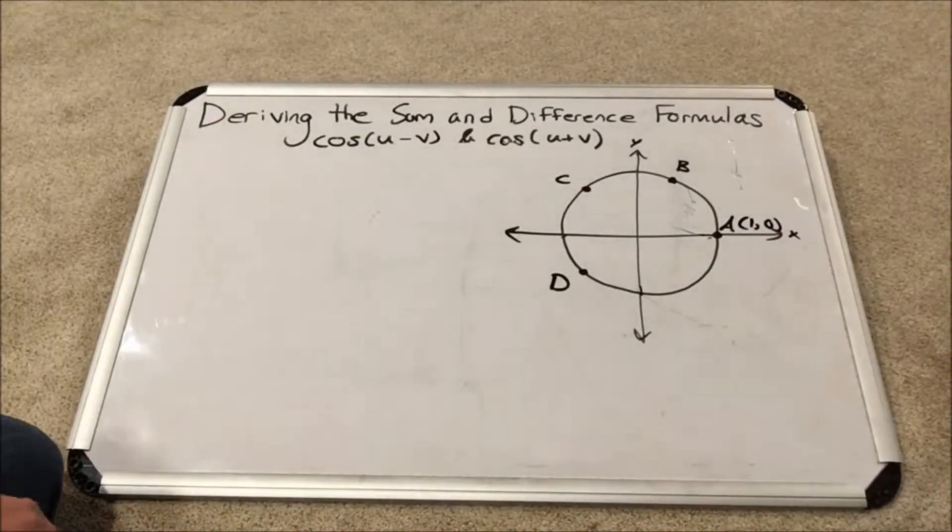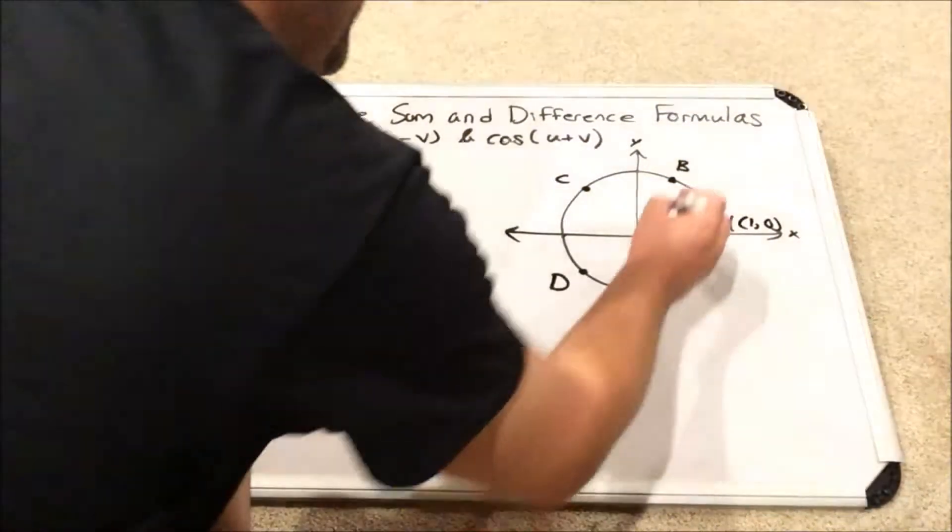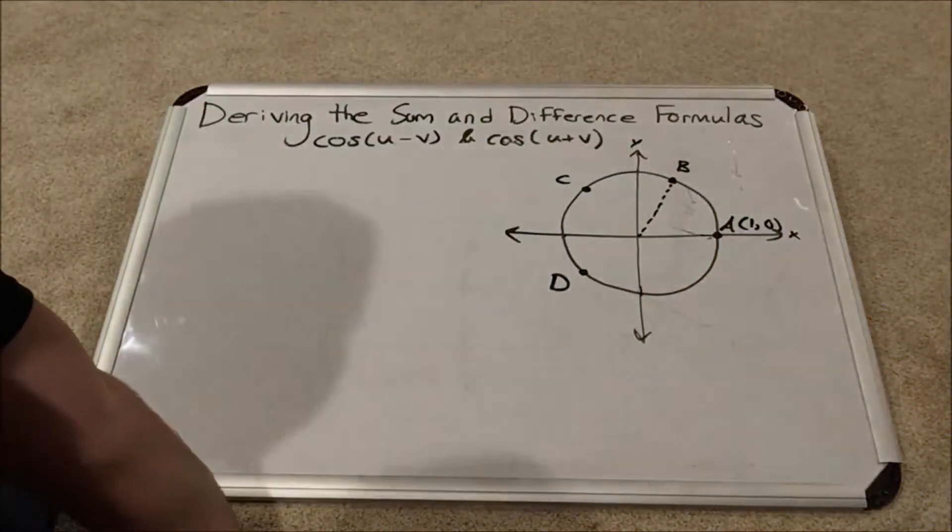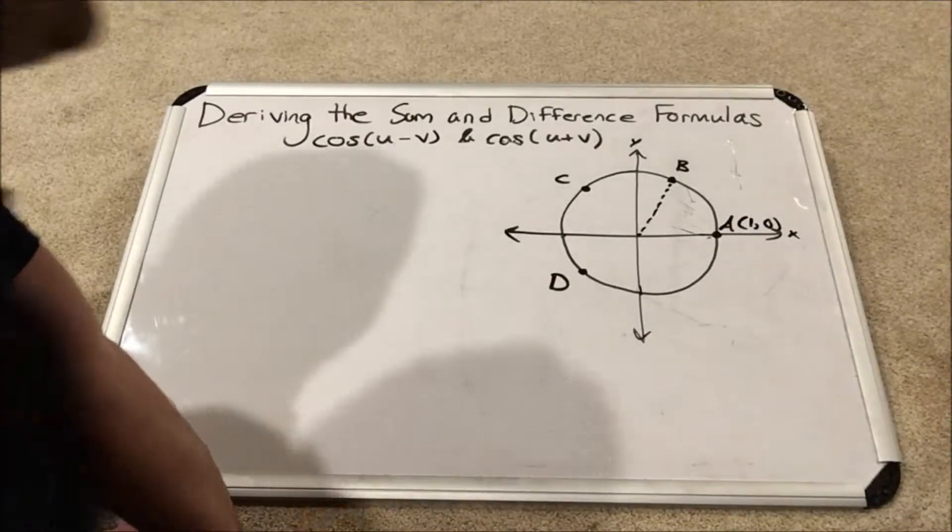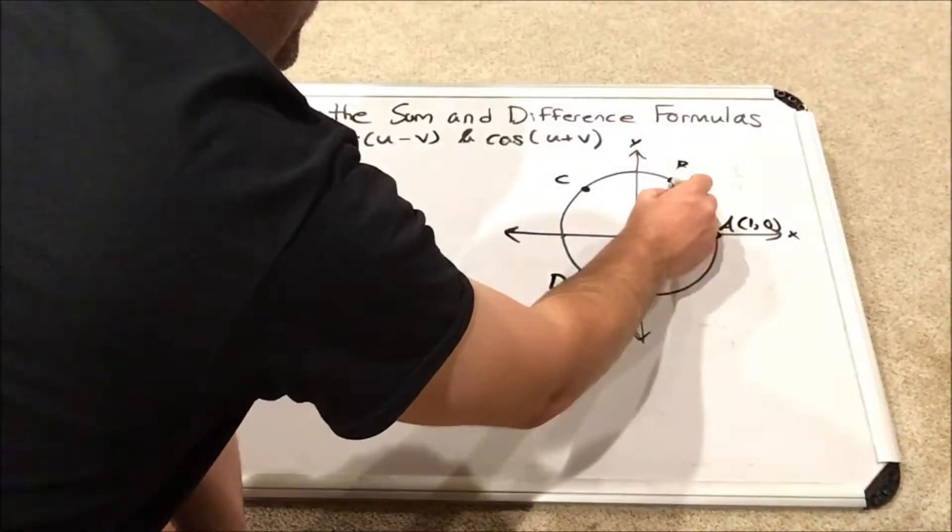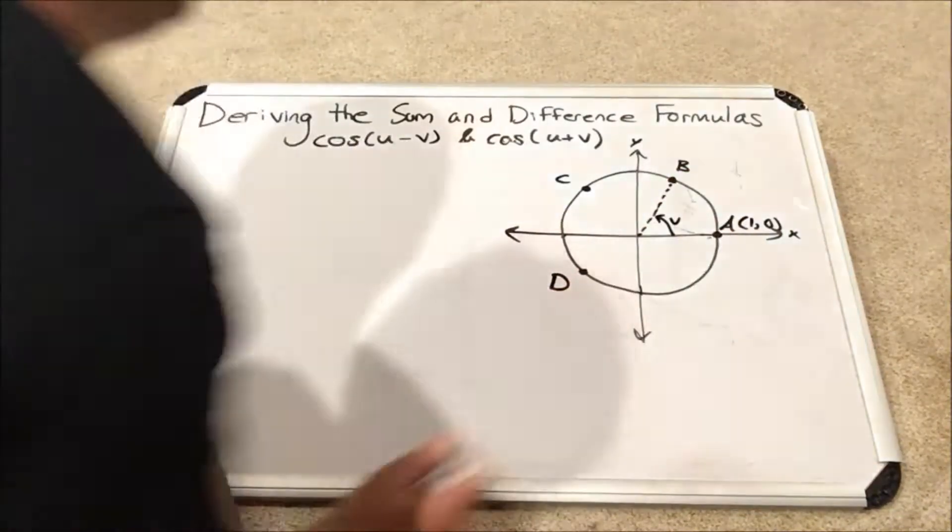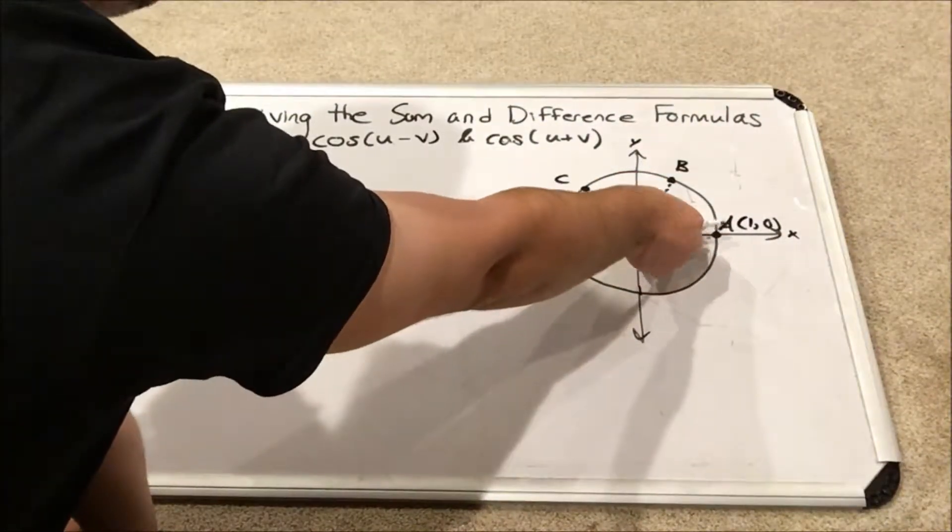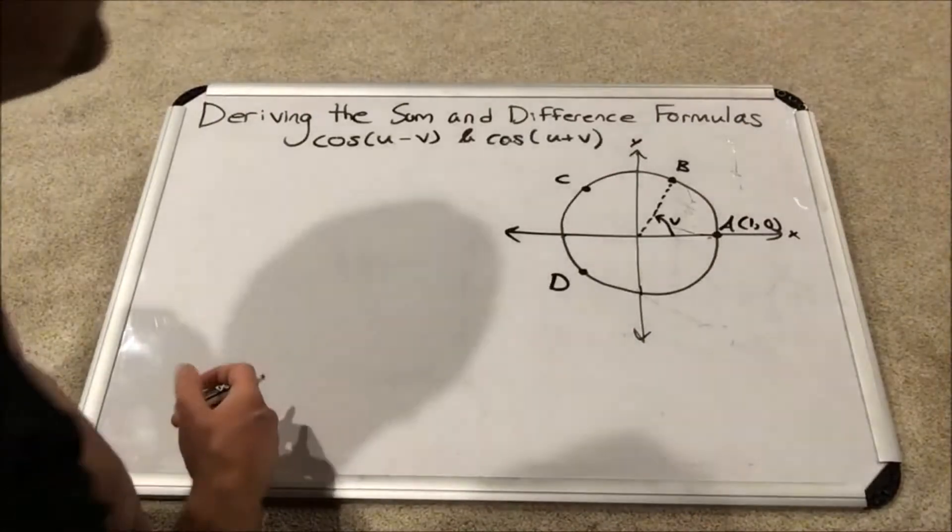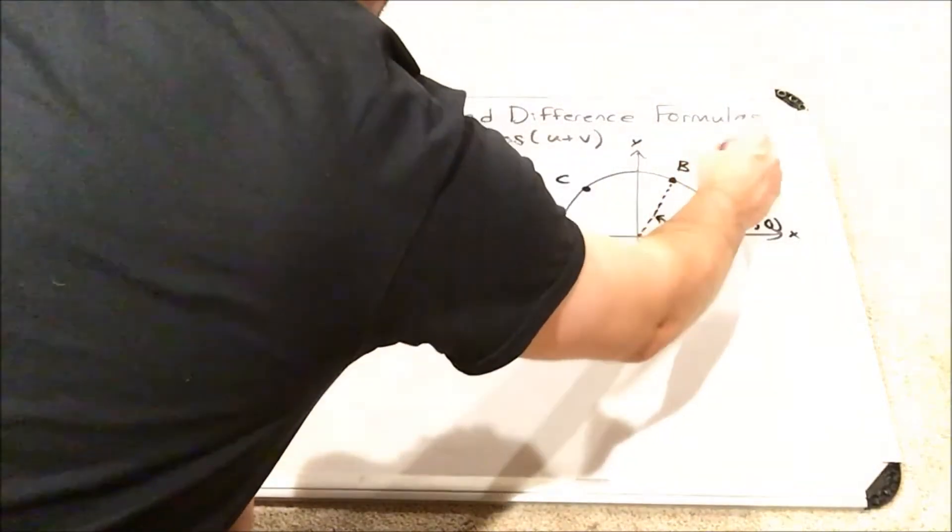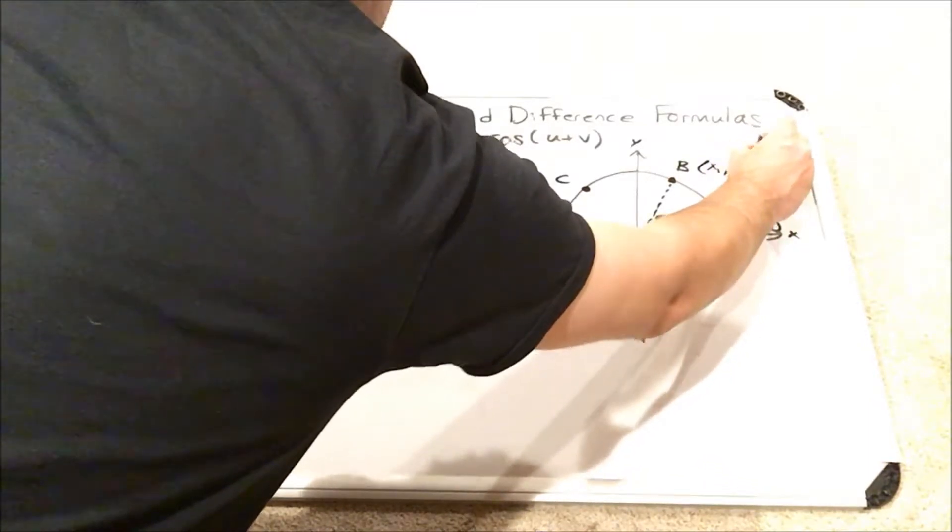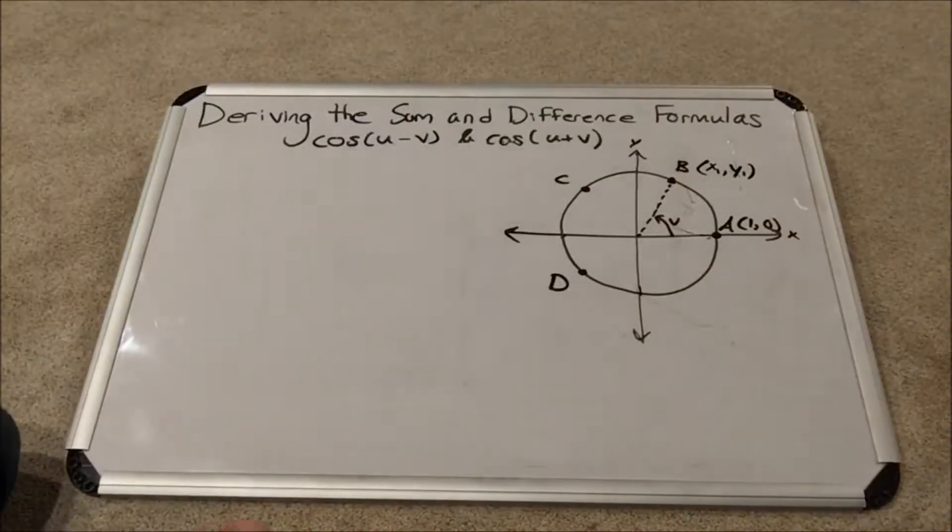Point B is at a certain place somewhere in the first quadrant. In trigonometry, we define our angles from the positive x-axis. And we're going to call this angle V, rotating from the positive x-axis to point B. And B will also have coordinates which are arbitrary. I'm going to call them x1, y1.